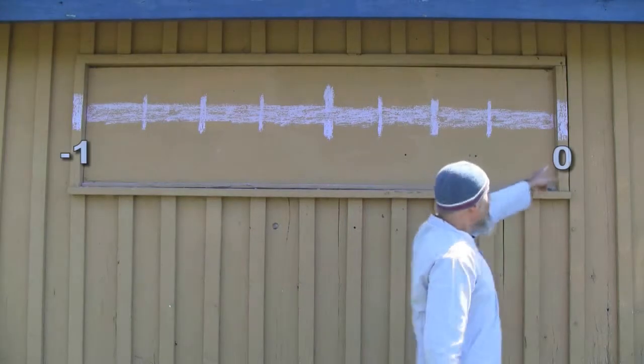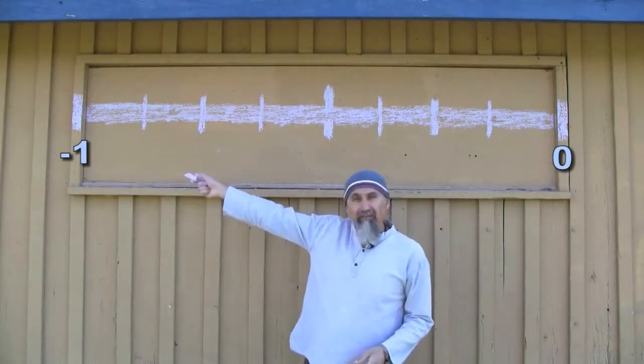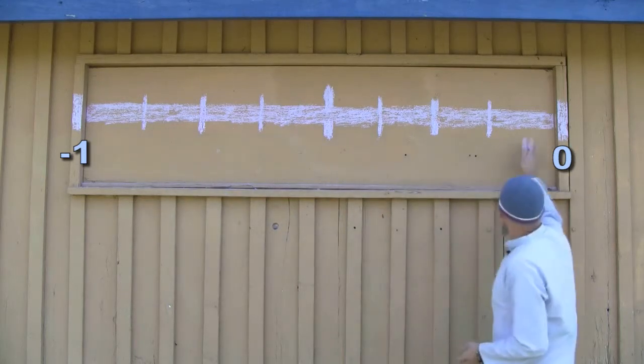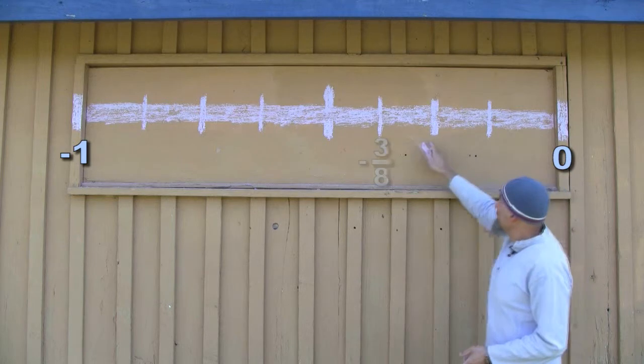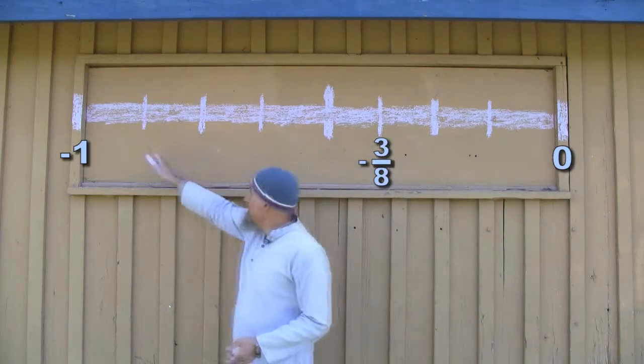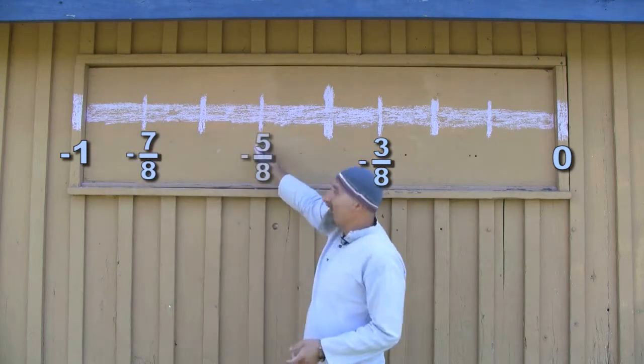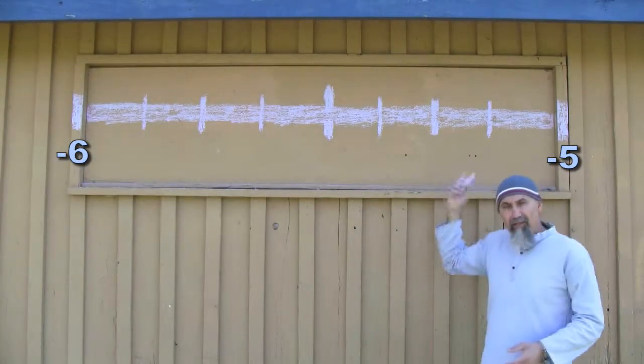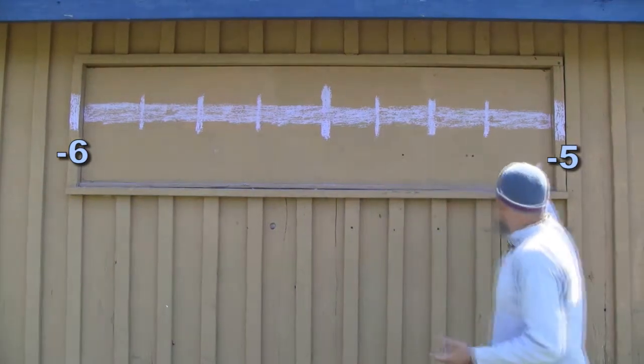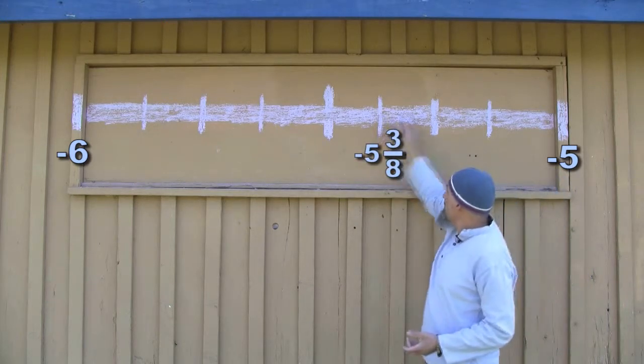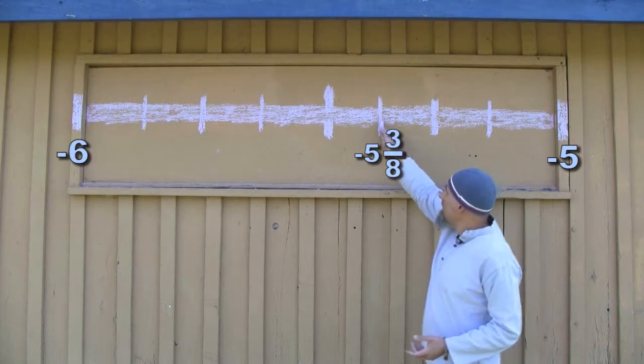If you're going in the other direction along the x-axis — towards the negative — this would be your zero, and going toward negative, that would be negative one. So negative three-eighths: starting from zero, one, two, three — that's negative three-eighths. Negative seven-eighths, negative one, negative five-eighths. If you're going from negative five to negative six and you want negative five and three-eighths: negative five, one, two, three.